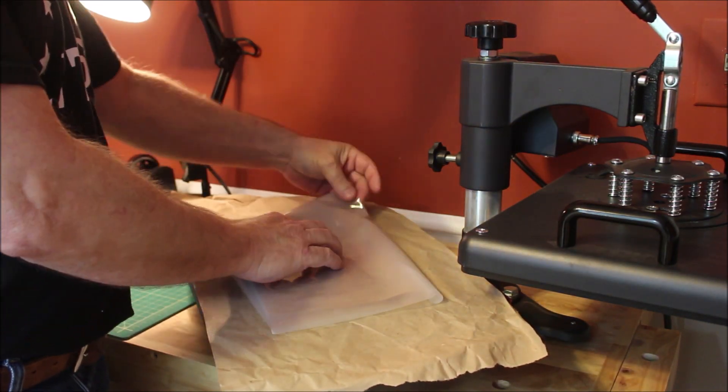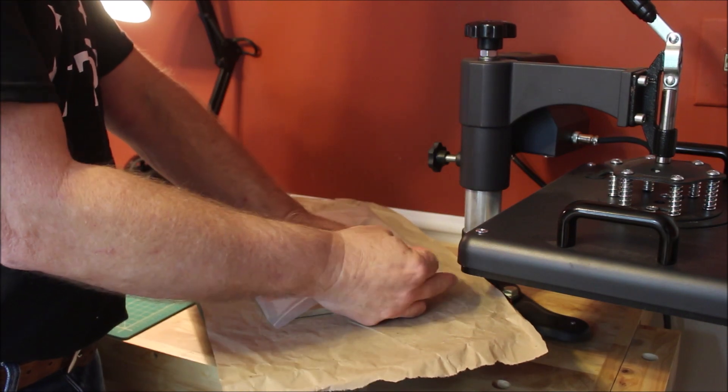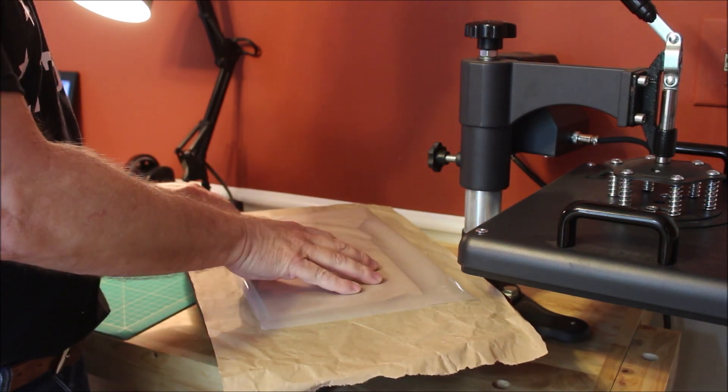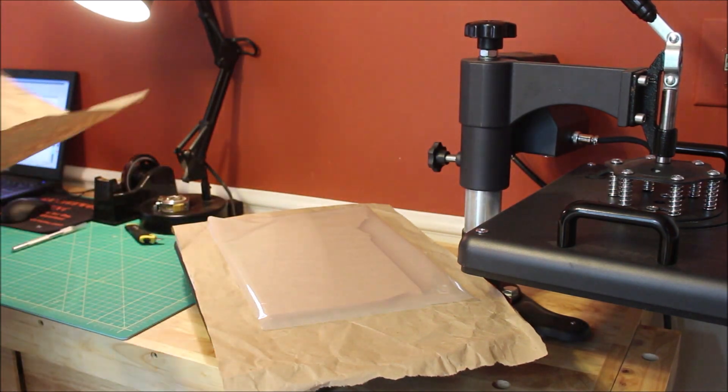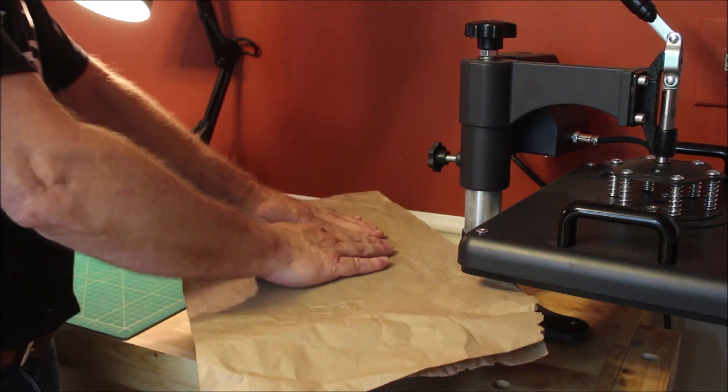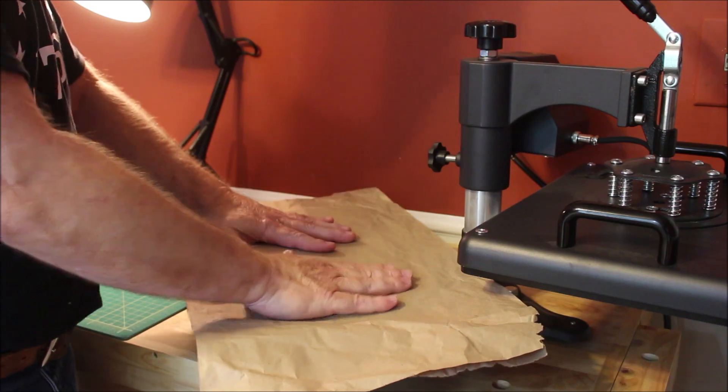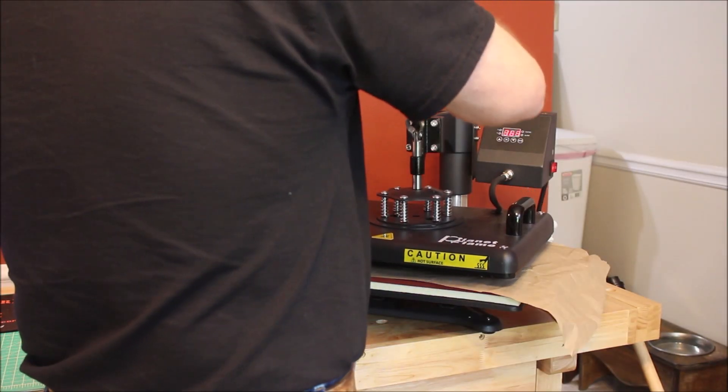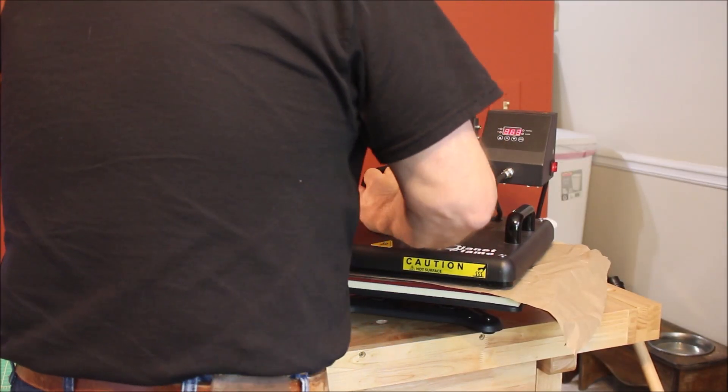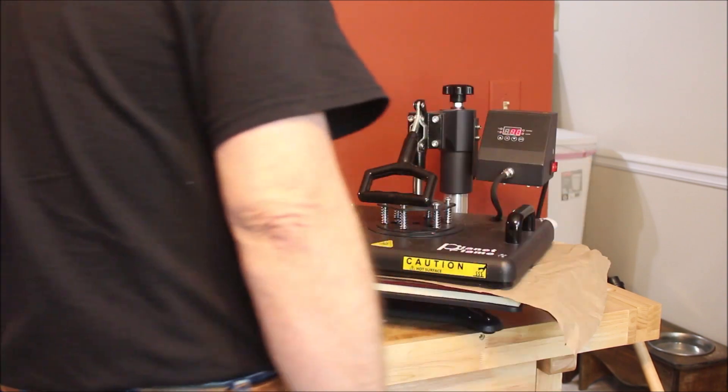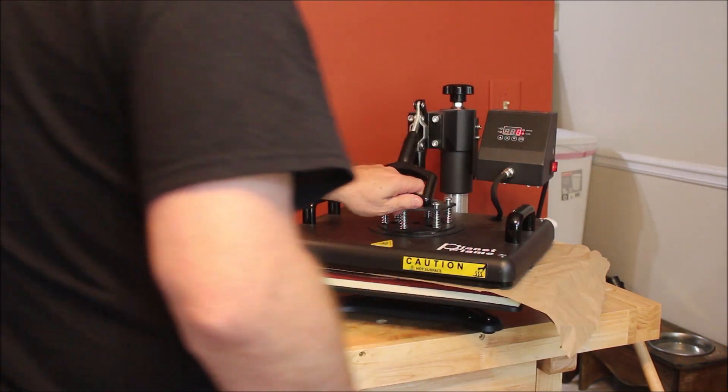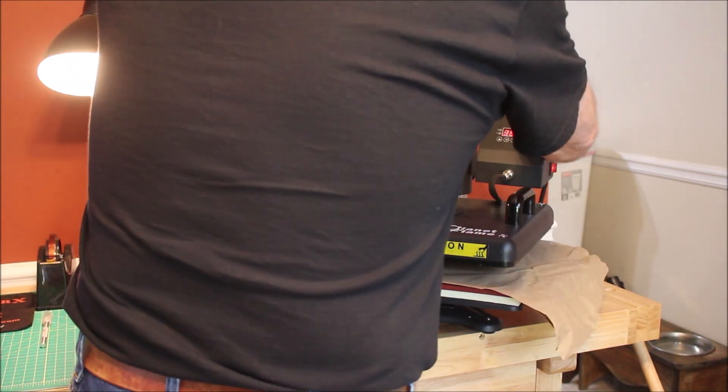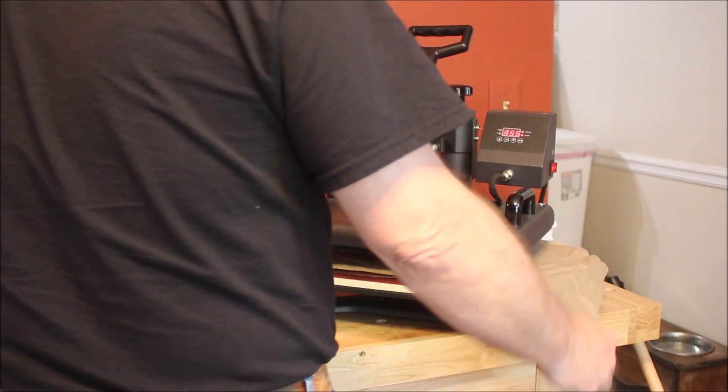I put a piece of the brown paper on the bottom and then the MDF and then I spread the laminate film over the MDF and then another piece of brown paper on top. And as soon as it heats up, we are good to go. Hit the timer for 90 seconds. And through the magic of video, the 90 seconds is up. And we'll pull this out and see what we have.